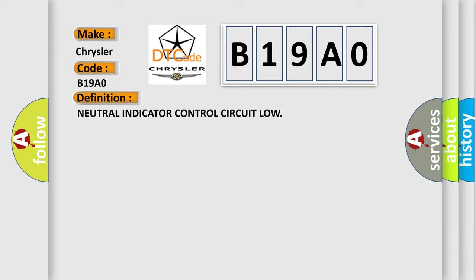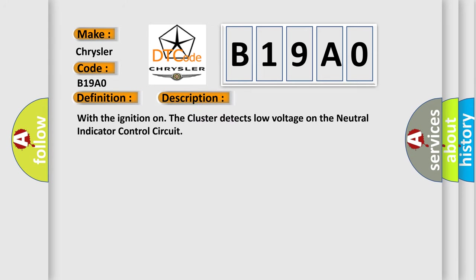And now this is a short description of this DTC code. With the ignition on, the cluster detects low voltage on the neutral indicator control circuit. This diagnostic error occurs most often in these cases.